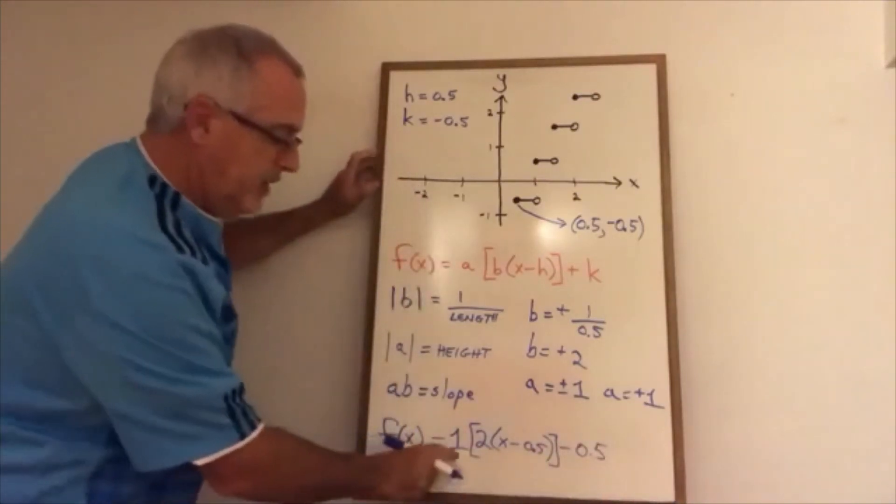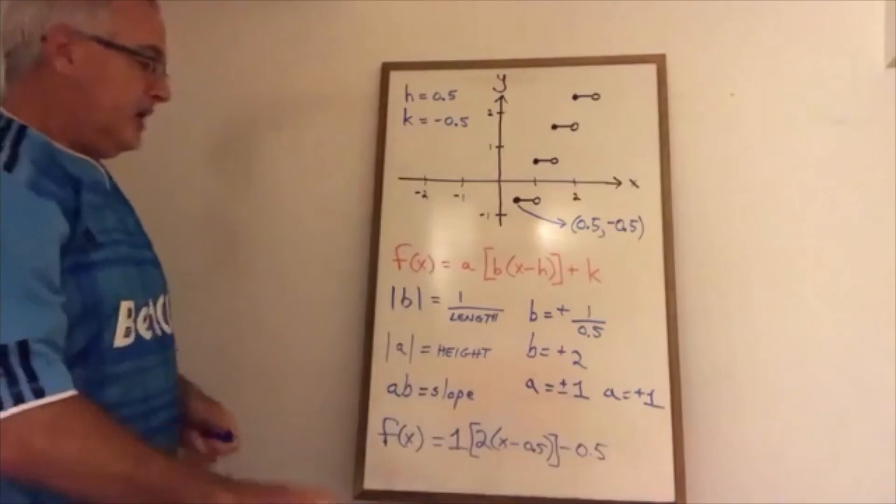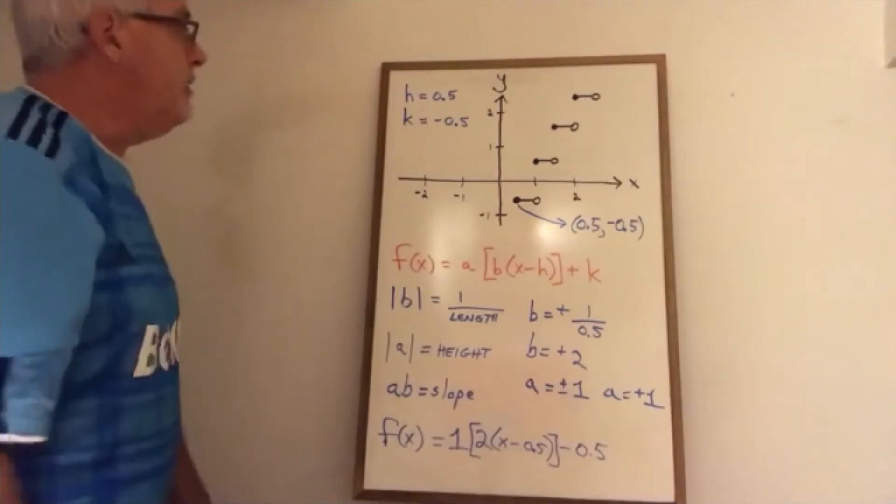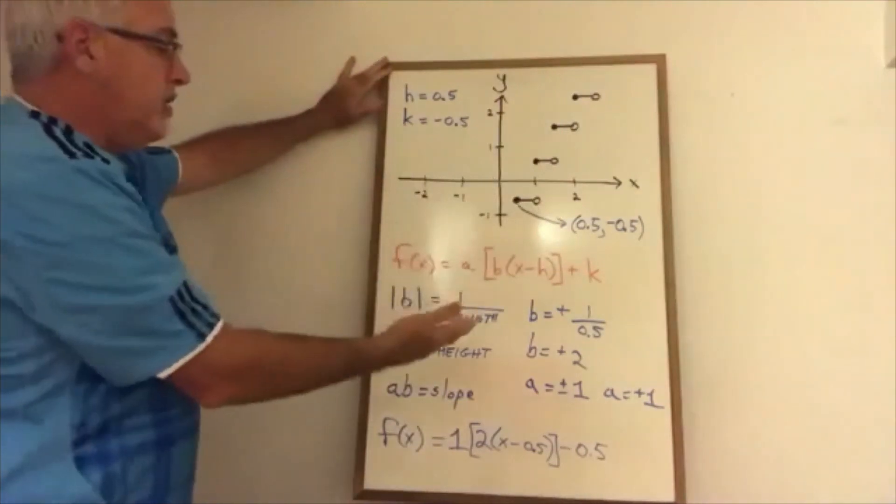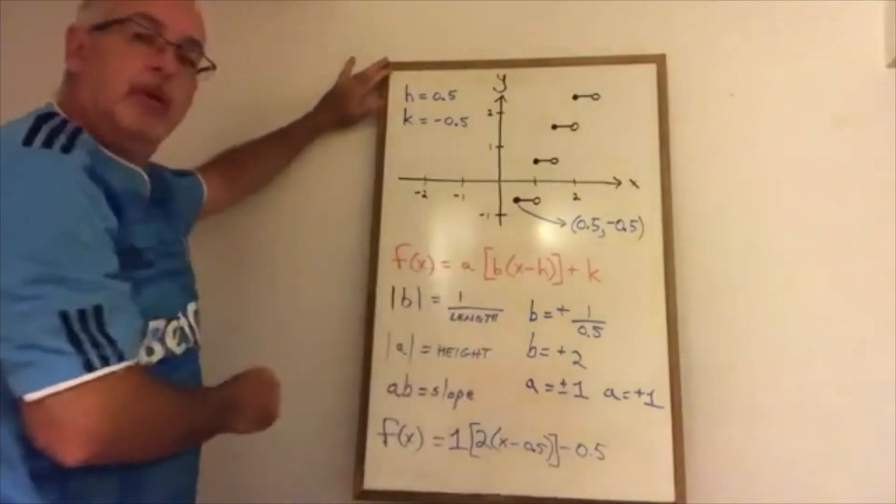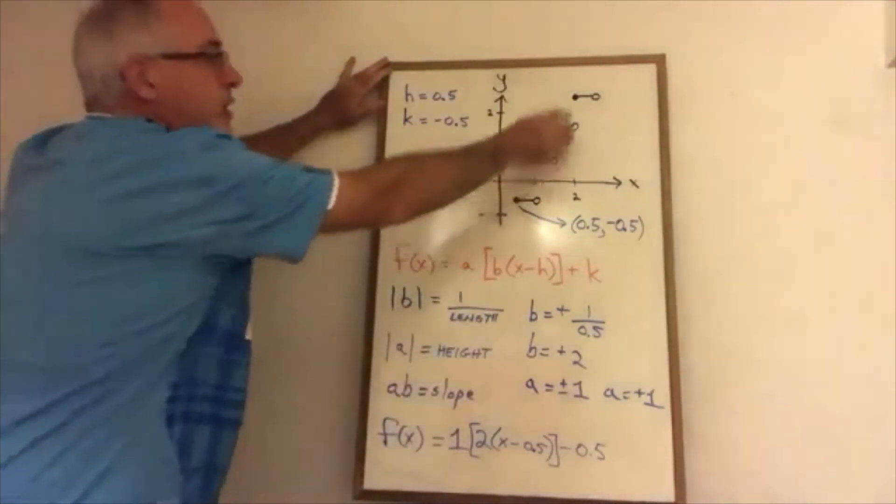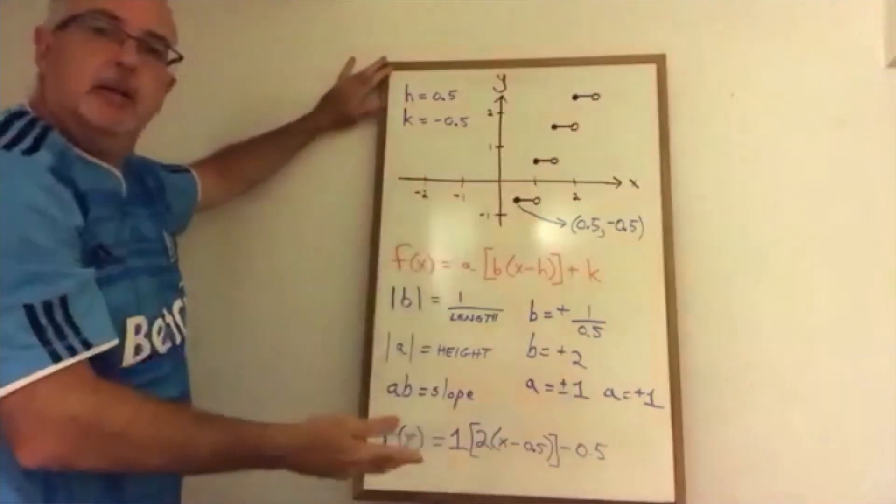Of course when we write this equation we don't have to show this one. So that is an example of deriving the equation of a step function from a graph, which we can do because we understand these key facts about the parameters. And there's enough clues on the graph to tell us what we need.